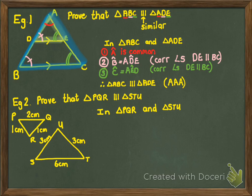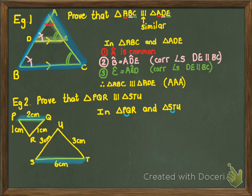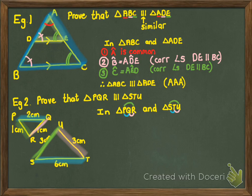Starting in triangle PQR and STU, the first thing to recognize is which side in the little triangle is partnered with which side in the big triangle. For example, PQ and ST are partners because they're both written first in their respective triangle names. In the same way, PR and SU are partners (first and last), and QR and TU are partners. Comparing the blue pair PQ to ST: two centimeters compared to six centimeters, giving a ratio of one third.